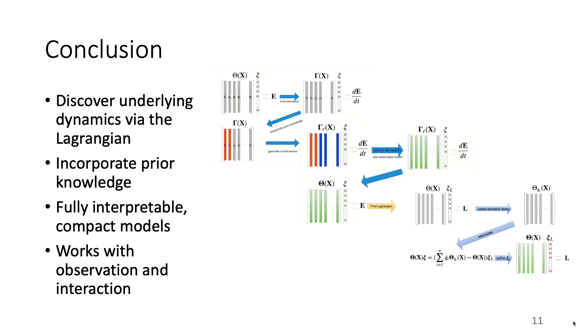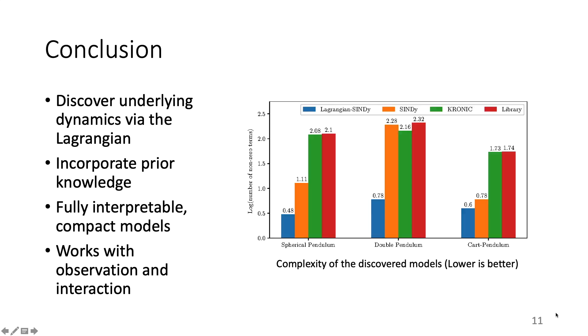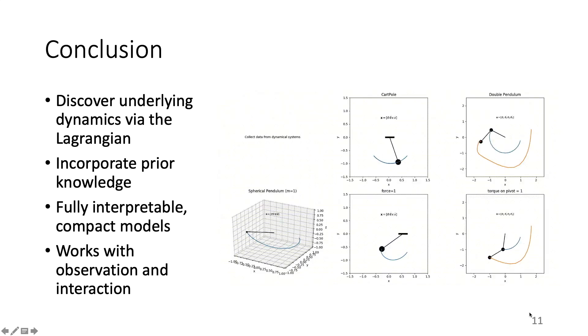To sum up, Lagrangian Cindy is a Cindy-based method to discover underlying dynamics via the Lagrangian. It can take prior knowledge of simple systems and extract fully interpretable, compact models. Last but not least, Lagrangian Cindy works with both passive observation and active interaction. One drawback of Lagrangian Cindy is occasional failures due to the lack of information or noise. Thank you for watching.